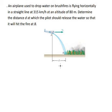Now I will show you how to answer. An airplane used to drop water on brushfires is flying horizontally in a straight line at 315 kilometers per hour at an altitude of 80 meters. Determine the distance D at which the pilot should release the water so that it will hit the fire at B.